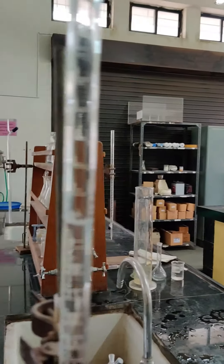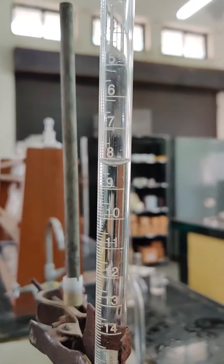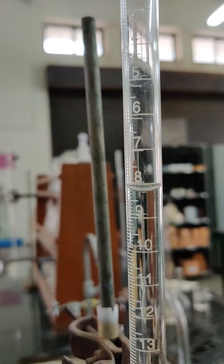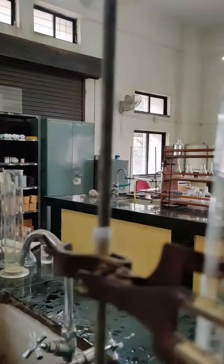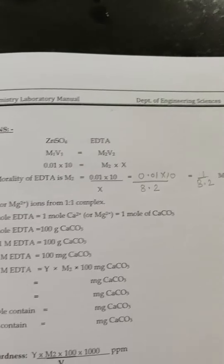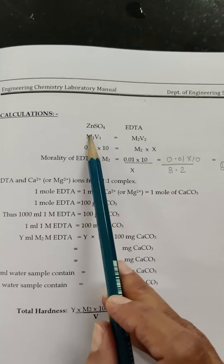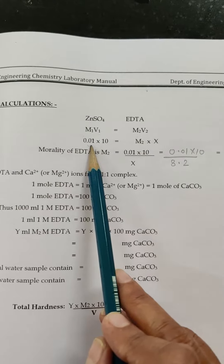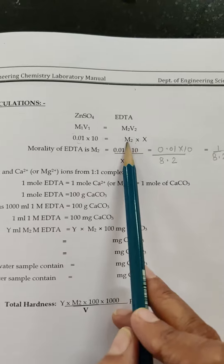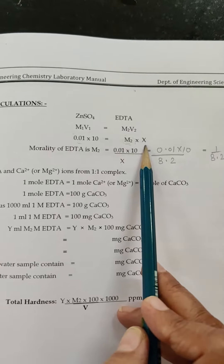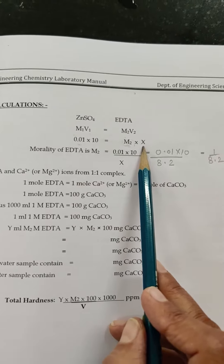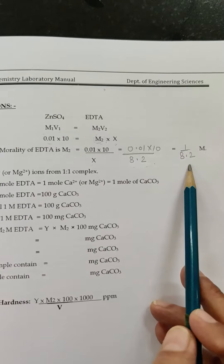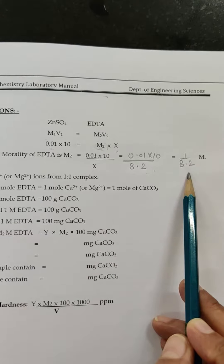As you can see, the burette reading is coming to 8.2 ml. It is a colourless solution, so we note the lower meniscus — it is 8.2. Now we use the first equation for standardisation: M1V1 = M2V2, where for zinc sulphate, molarity is 0.01 and volume is 10 ml. For EDTA, we find molarity M2 into the volume used, which is 8.2 ml. So the molarity of EDTA = (0.01 × 10) / 8.2 mol/L.